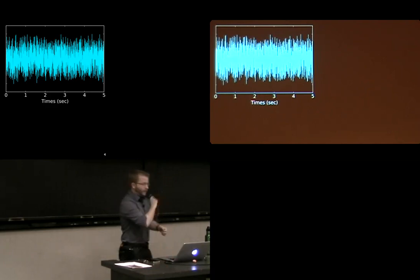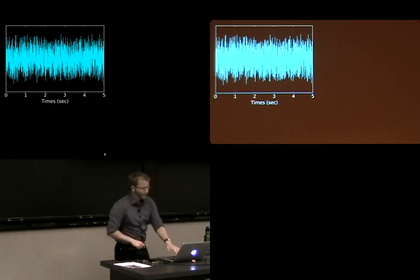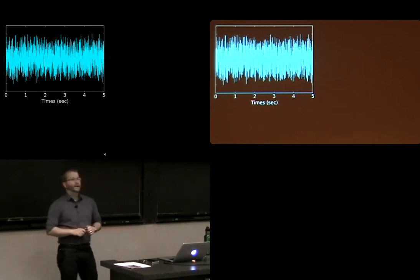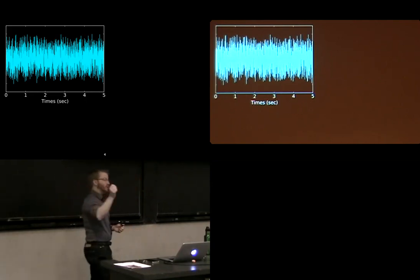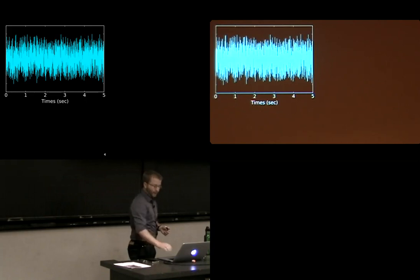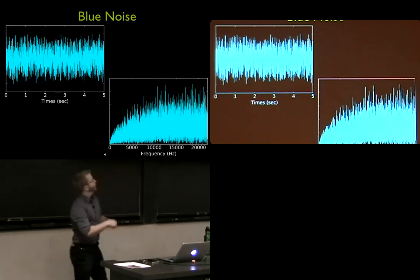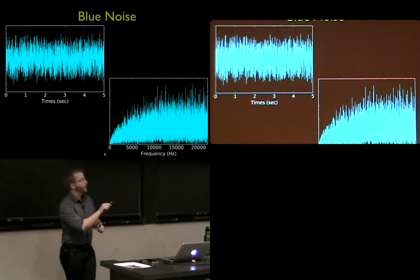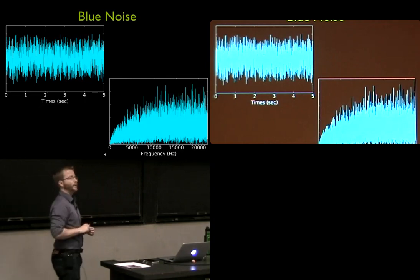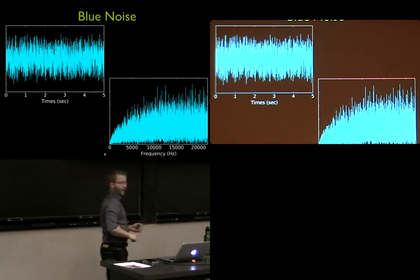The only color we have left on the extremes of the spectrum is blue noise, which has even more contribution from high frequencies than white noise did. As you'd expect, if we look at the spectrum, we see lower noise at low frequencies and higher noise at high frequencies.